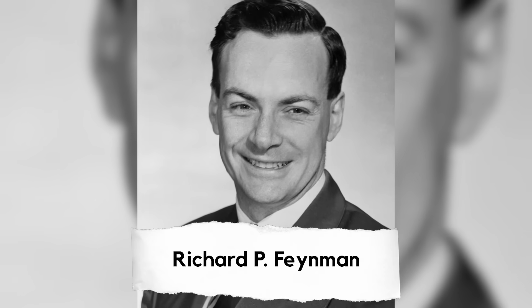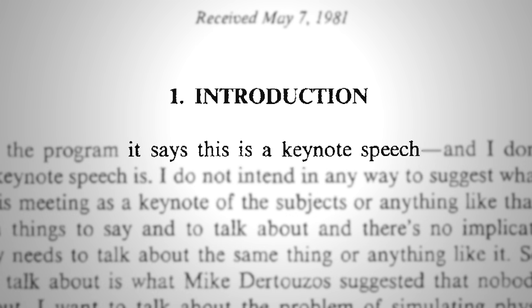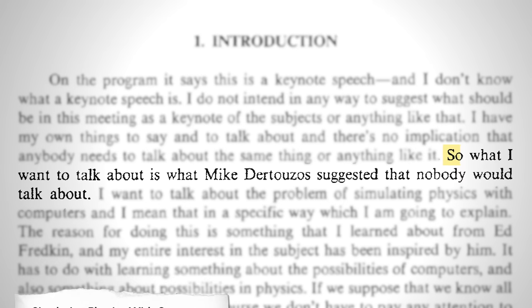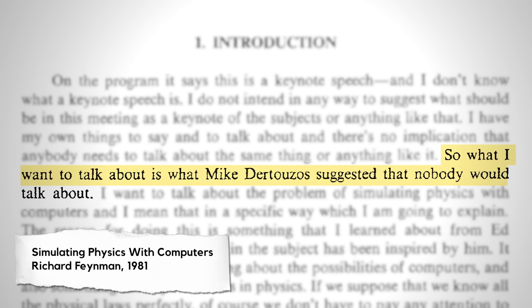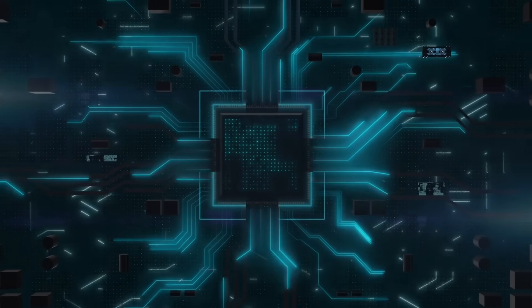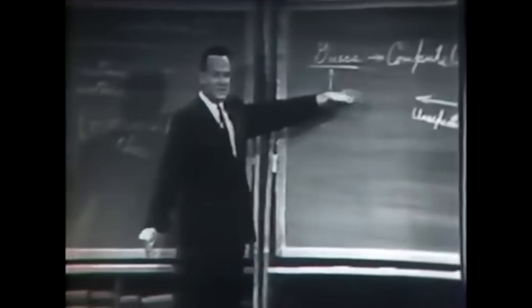42 years ago, when the world of computing was just taking shape, physicist Richard Feynman took the stage at MIT to give a keynote speech. He started by admitting he didn't know what a keynote speech was, but then went on to talk about something he thought nobody else at the conference would talk about: his vision for quantum computing. Quantum computing is a technology coming into its own right now, and the breakthroughs we're seeing today were in many ways anticipated by Feynman's brilliant insights in his 1981 lecture.